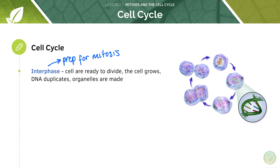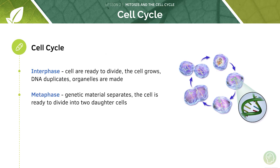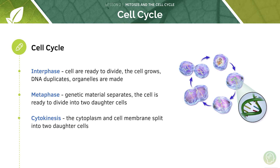Remember, at the end of mitosis we're going to end up with two daughter cells, so we're going to need more DNA and more organelles. The second phase is where the genetic material separates and the cell is now ready to divide into two daughter cells. At the end we get cytokinesis — 'kinesis' means movement and 'cyto' means cell — so it's the movement of the cell as it splits apart into two separate cells. The cytoplasm splits in half and the cell membrane comes around to form two new daughter cells.